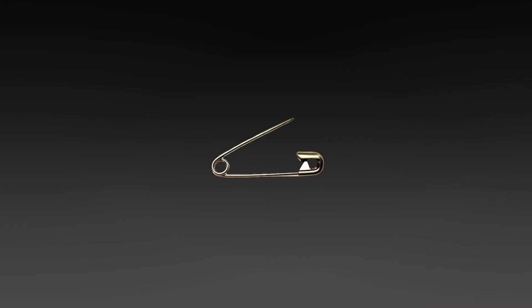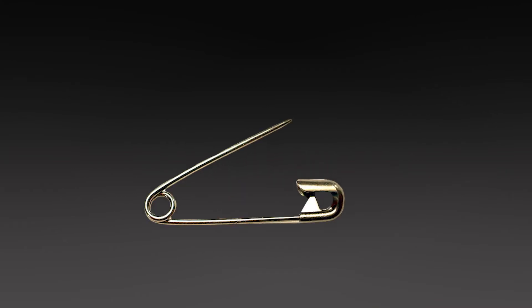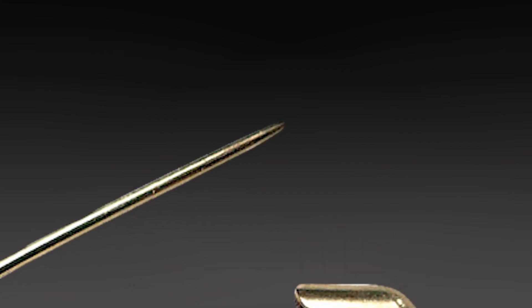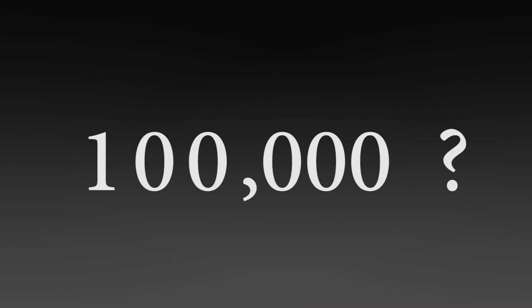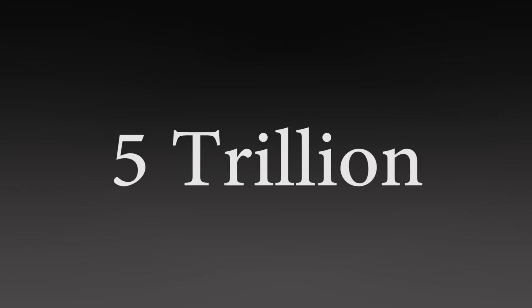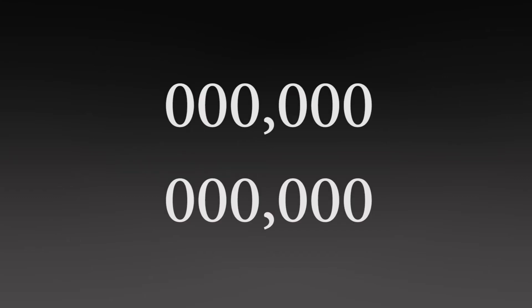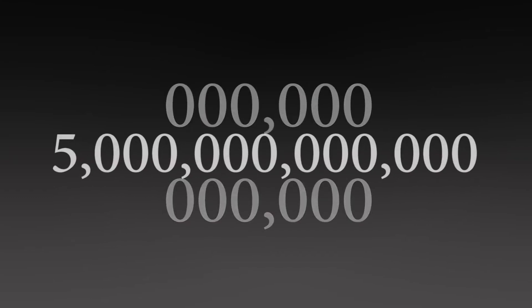In chemistry, we typically don't talk about donuts. The things we talk about are atoms and molecules. Consider a safety pin. How many atoms do you think could fit on the point of this safety pin? A thousand? One hundred thousand? Believe it or not, it's actually 5 trillion atoms. That would be 5 followed by 12 zeros. Whoa, that's a lot of atoms.